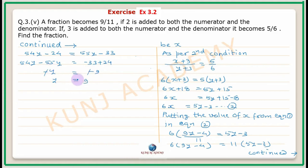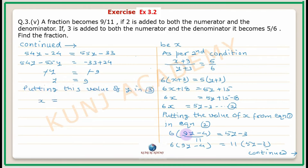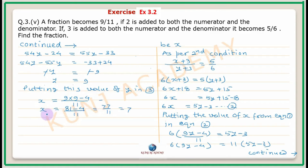Putting this value of y in equation 1: x equals 9 into 9 minus 4 upon 11, giving x equal to 7. Answer: numerator is 7 and denominator is 9, therefore the fraction is 7 upon 9.